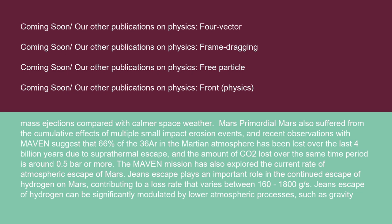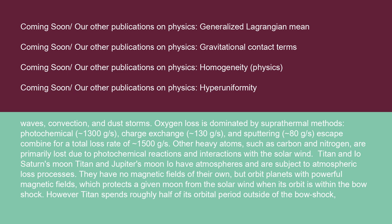Primordial Mars also suffered from the cumulative effects of multiple small impact erosion events, and recent observations with MAVEN suggest that 66% of the ³⁶Ar in the Martian atmosphere has been lost over the last 4 billion years due to superthermal escape, and the amount of CO₂ lost over the same time period is around 0.5 bar or more. The MAVEN mission has also explored the current rate of atmospheric escape of Mars. Jeans escape plays an important role in the continued escape of hydrogen on Mars, contributing to a loss rate that varies between 160 to 1800 g/s. Jeans escape of hydrogen can be significantly modulated by lower atmospheric processes such as gravity waves, convection, and dust storms. Oxygen loss is dominated by superthermal methods: photochemical (1300 g/s), charge exchange (130 g/s), and sputtering (80 g/s), for a total loss rate of 1500 g/s. Other heavy atoms such as carbon and nitrogen are primarily lost due to photochemical reactions and interactions with the solar wind.